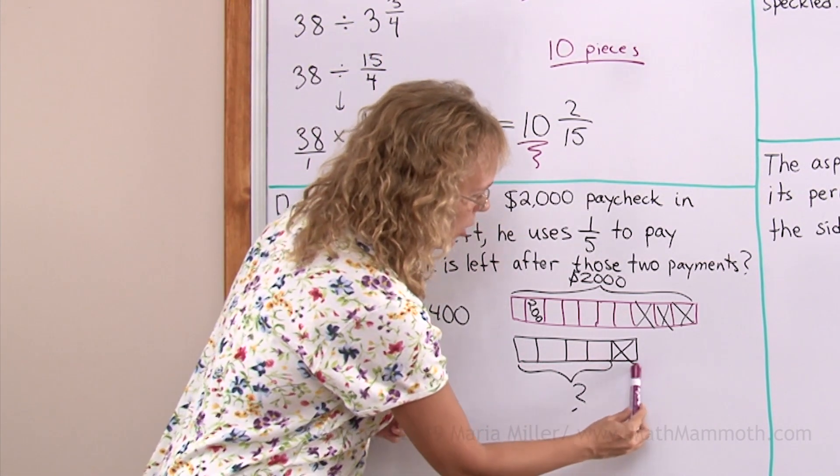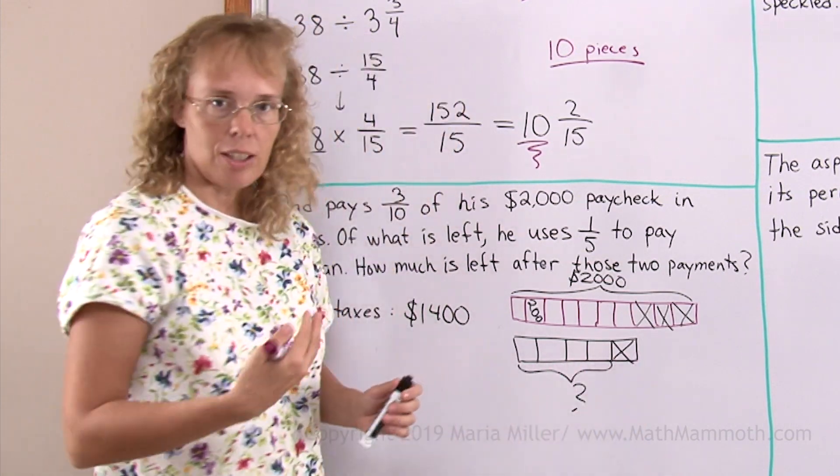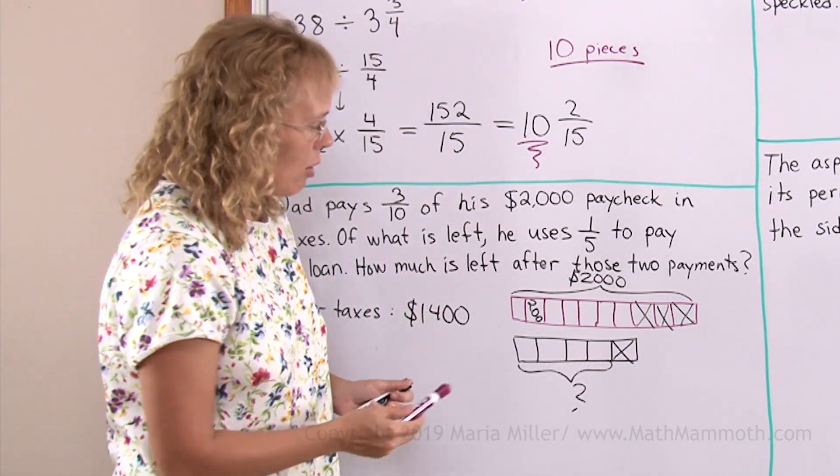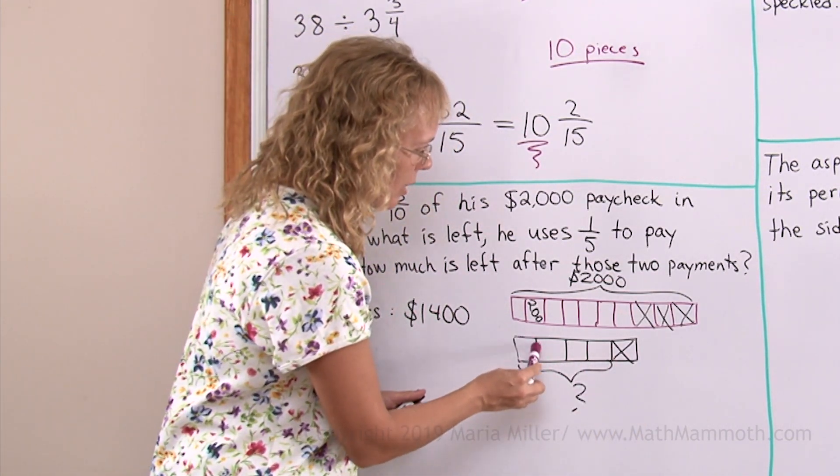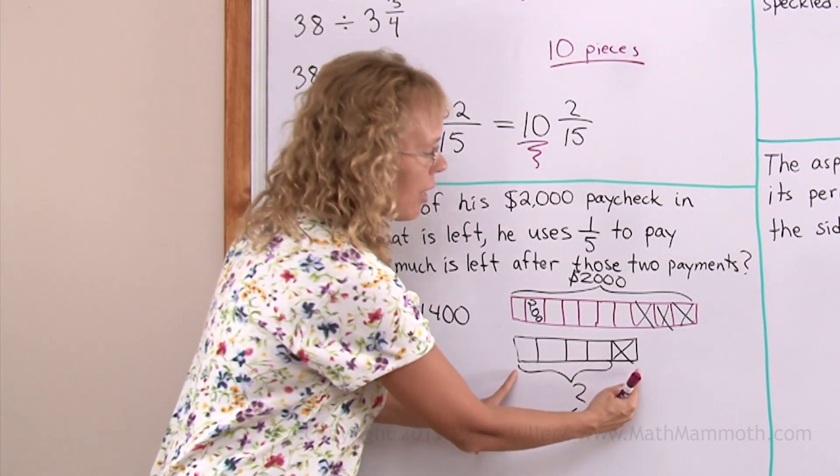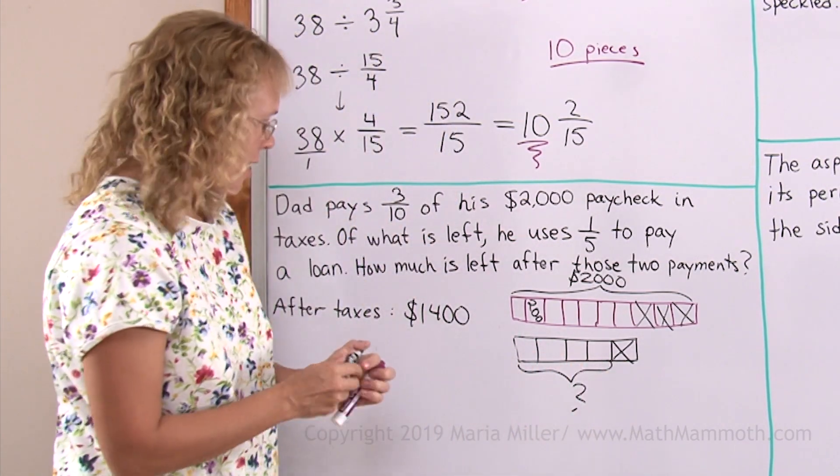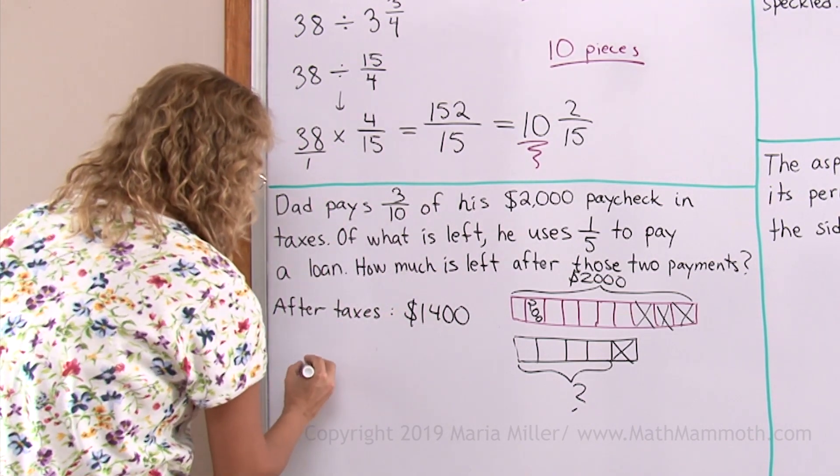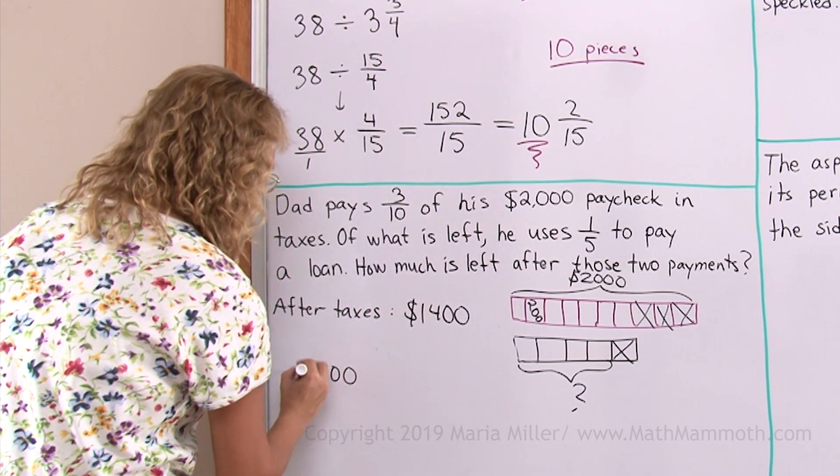So this here, this whole thing here is one thousand four hundred. Now I want to find out how much is this piece here. That would be the one thousand four hundred divided by five, right? Well, for that, I might just need long division.